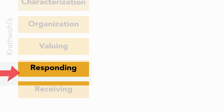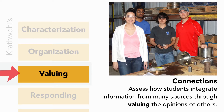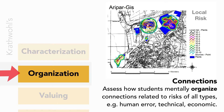Can you use a teaching method that emphasizes value creation for others and then assesses how students respond to failure? What about requiring the integration of information from many sources and then assessing how students value the opinions of others? Within Connections, there's a portion of the Keen framework — the Habits of Mind — that include managing and assessing risk, which could tie into a learning objective that requires an organized view of values.